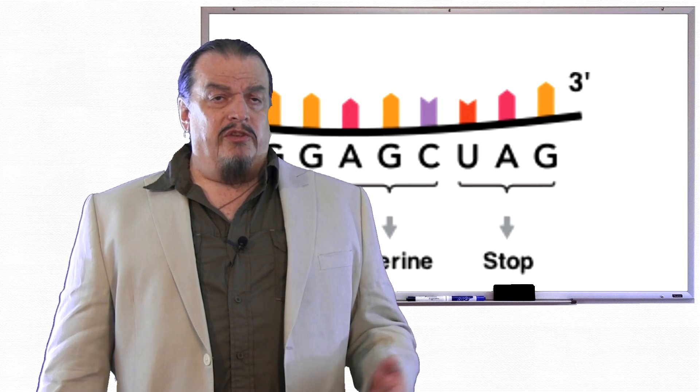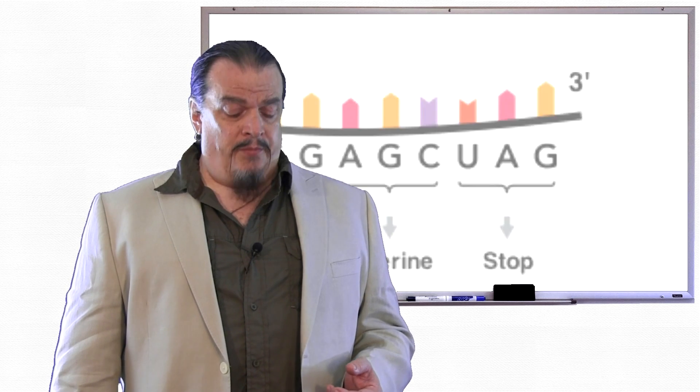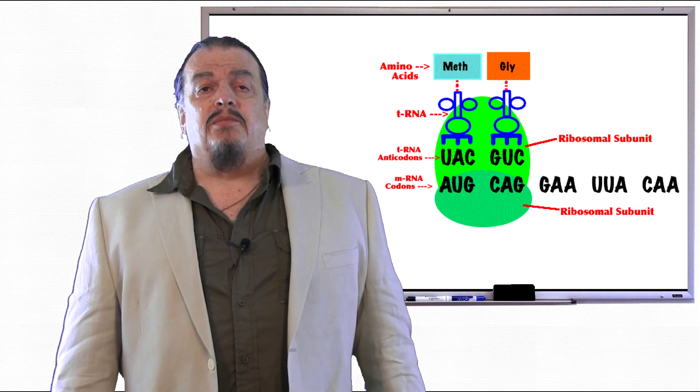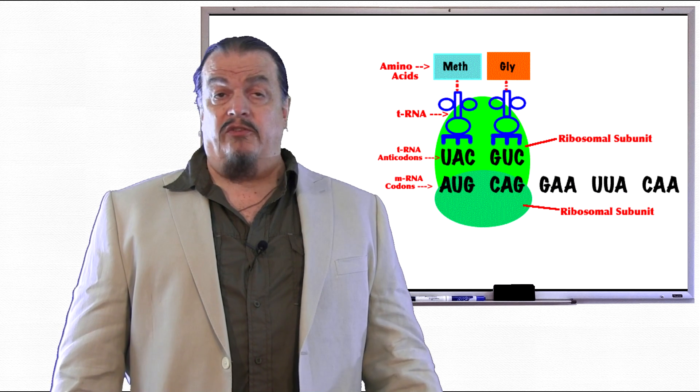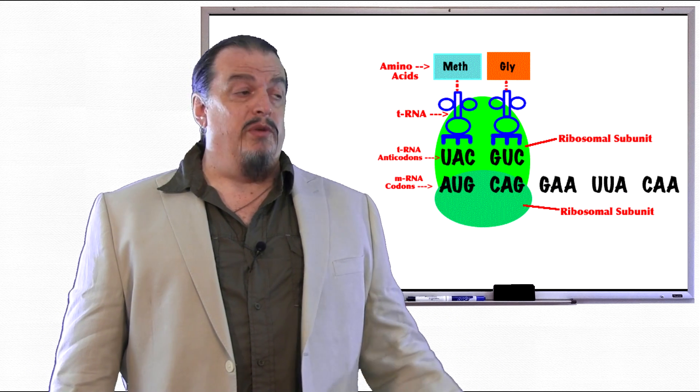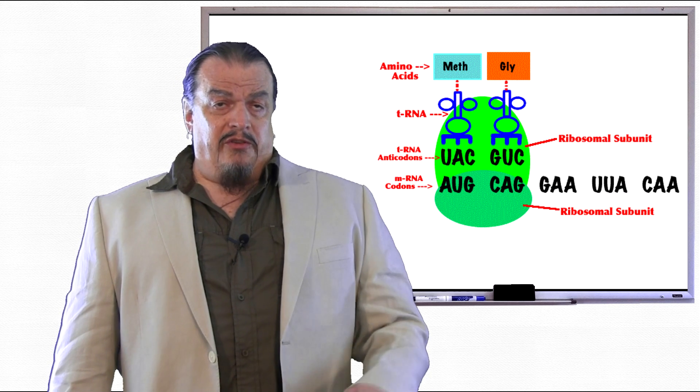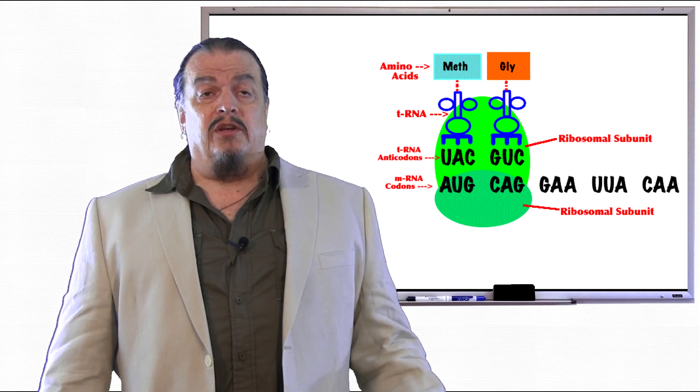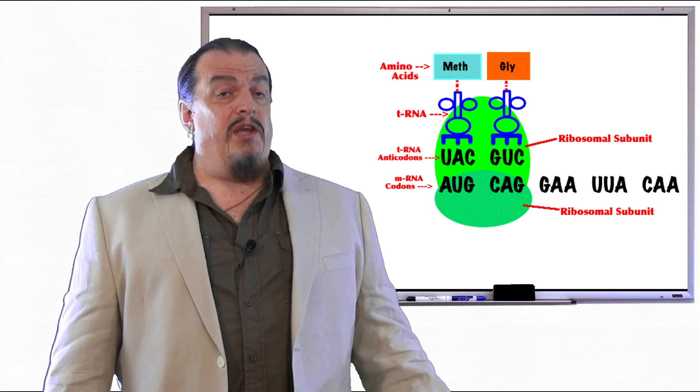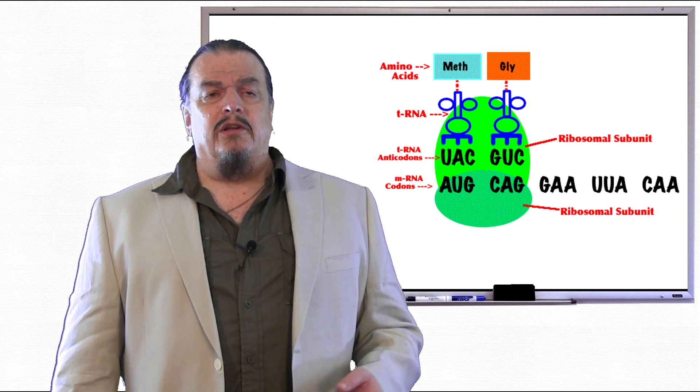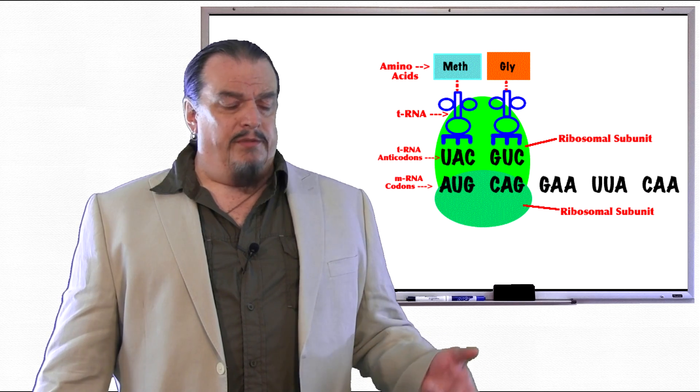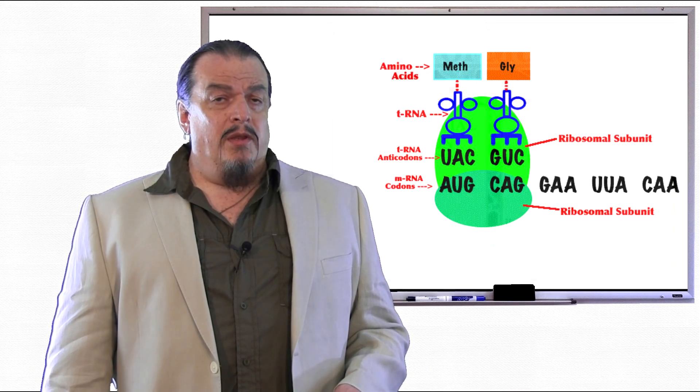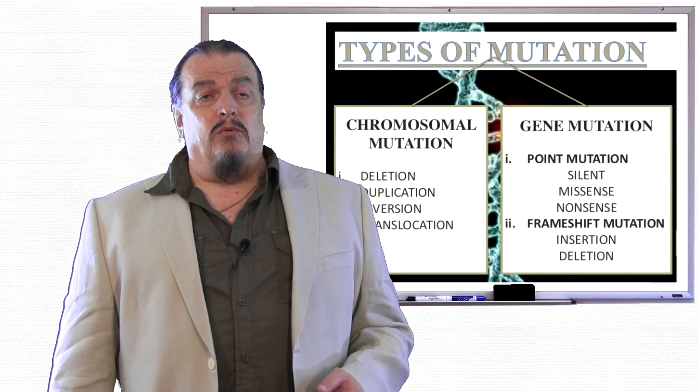But does protein synthesis always run smoothly? The DNA has a 99% fidelity rate because the process is efficient and because repair enzymes fix the vast majority of copying errors when there is a mistake. Mistakes in DNA replication or errors in copying the code faithfully are called mutations. What happens when a codon is spelled incorrectly? Does it, like a word, lose its meaning? Let's have a look at these mistakes and what that means.